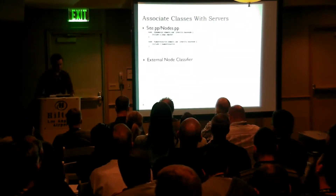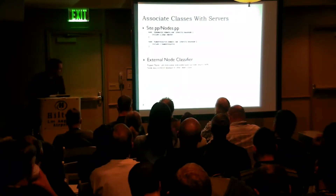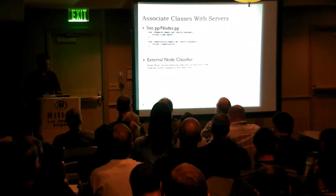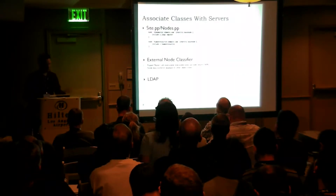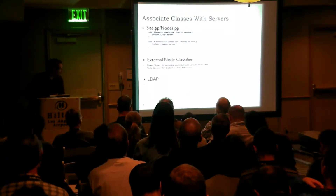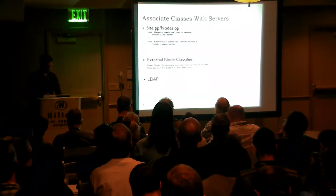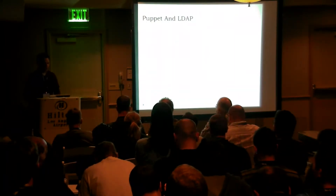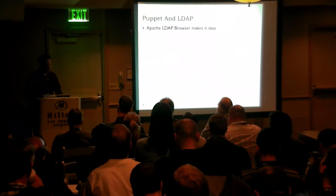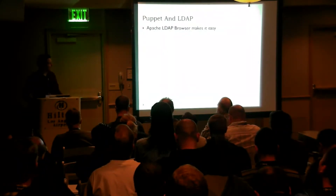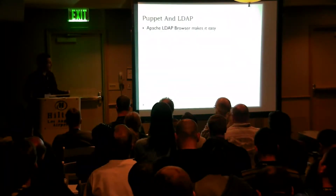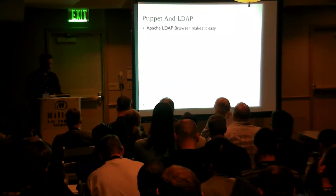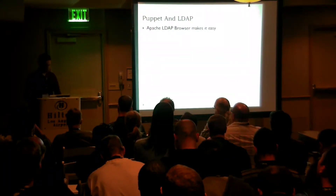The problem becomes associating the classes with the servers. You can use your site.pp or node.pp — that's how a lot of people start off. The problem is you're managing those files on a regular basis just to add a system. Another way is an external node classifier, which I looked into, but the problem was it wasn't as easy as LDAP. With Puppet and LDAP you have the ability to do anything programmatically — you can script against your LDAP tree. Apache LDAP browser makes it very easy; it's a plug-in for Eclipse or standalone graphical LDAP browser.